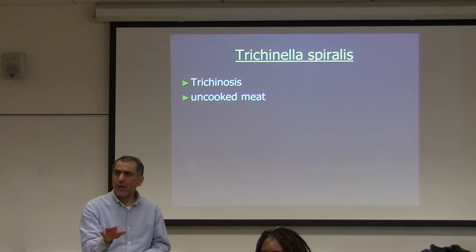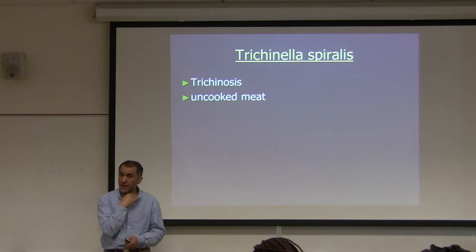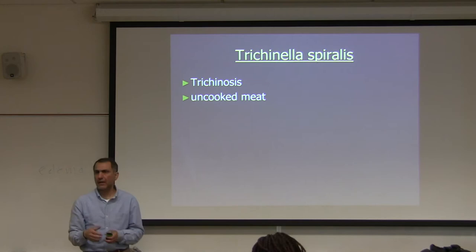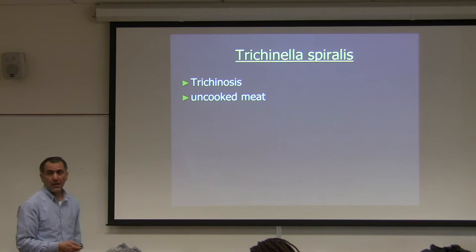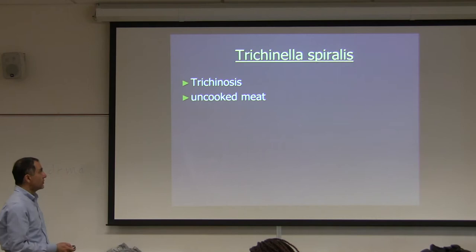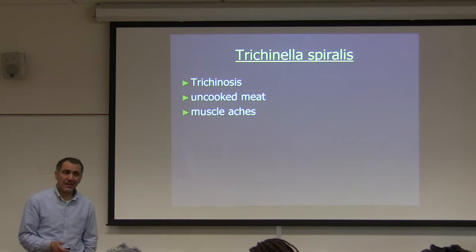A student asked if uncooked meat means beef, swine, or all meat — the answer is all meat, including bear. People who go hunting in the wild and eat bear meat raw can get infected. There are two life cycles: the sylvatic and the domestic. People with this infection have muscle aches.